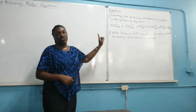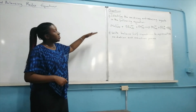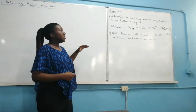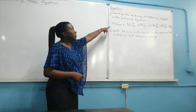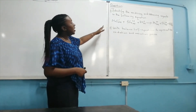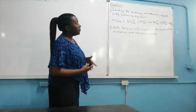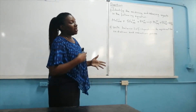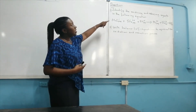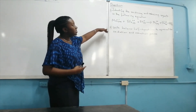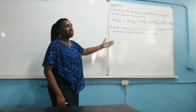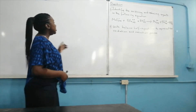In this new question, we are supposed to identify the oxidizing and reducing agents in the process where iron 2 is reacting with permanganate ion to form manganese 2 and Fe³⁺. In addition to identifying the oxidizing and reducing agents, we need to write balanced half equations to represent the oxidation and reduction processes.